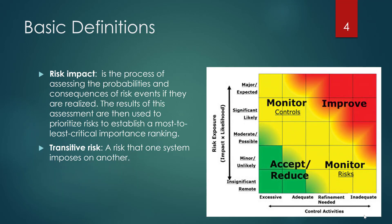Risk impact is going to be the process of assessing the probabilities and consequences of risk events that occur. The results of these assessments are then used to prioritize risk and establish the most to least critical importance rankings. This gives you an example of relating risk exposure — which is impact times likelihood — against the current control activities being used, with four different response verbs: improve, monitor, accept, or reduce.